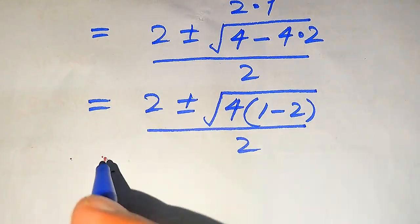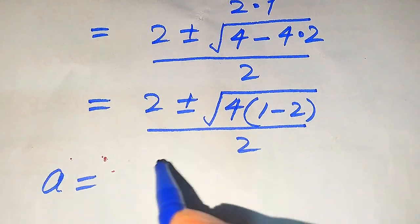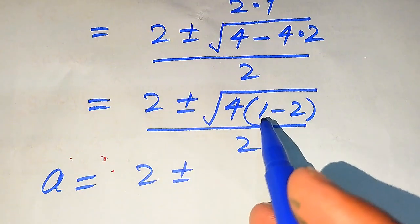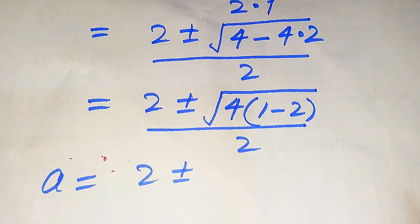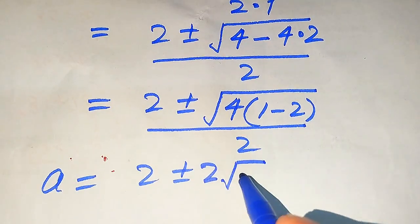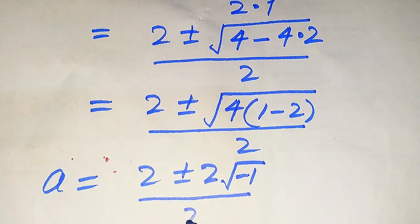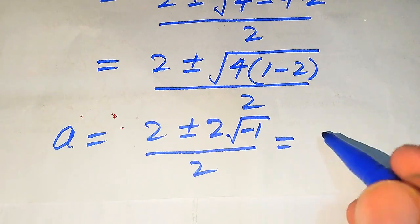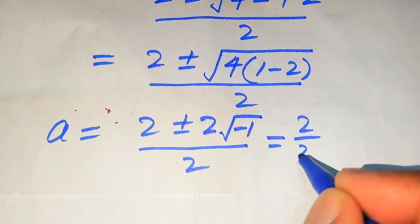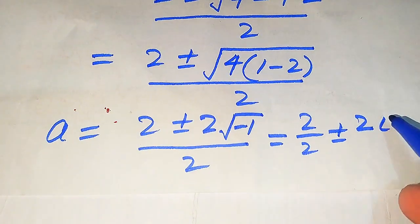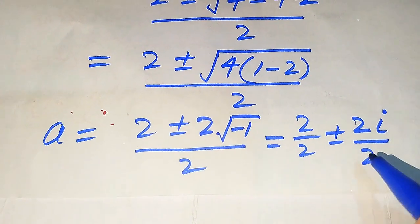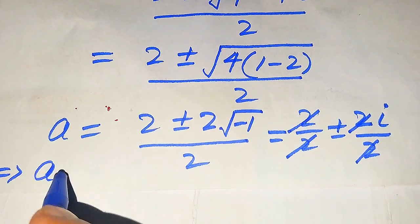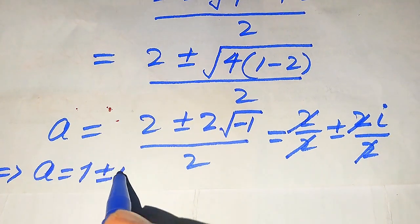So a equals 2 plus or minus the square root of 4 times (1 minus 2). We separate the square root: the square root of 4 is 2, and 1 minus 2 equals minus 1, so the square root of minus 1 becomes i (iota). Breaking the fraction, 2 divided by 2 gives 1, and 2i divided by 2 gives i, so a equals 1 plus or minus i.